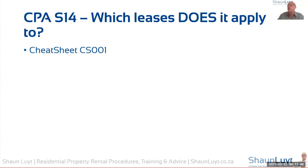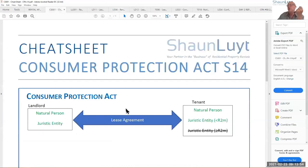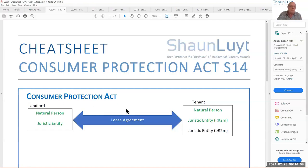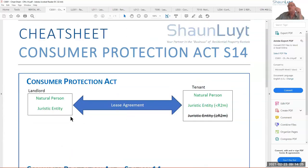The Consumer Protection Act deals with natural person or juristic entity landlords, as well as natural person or juristic entity tenants under an asset value or turnover of under two million rand per annum. The CPA does not apply to consumers — tenants — who are juristic entities and have a turnover or asset value equal to or more than two million rand.